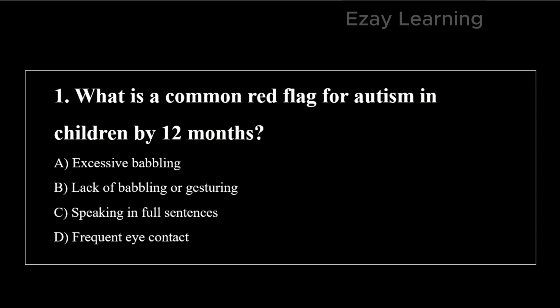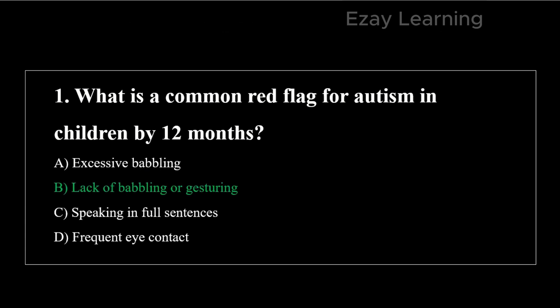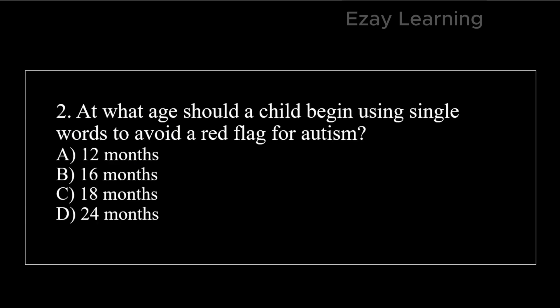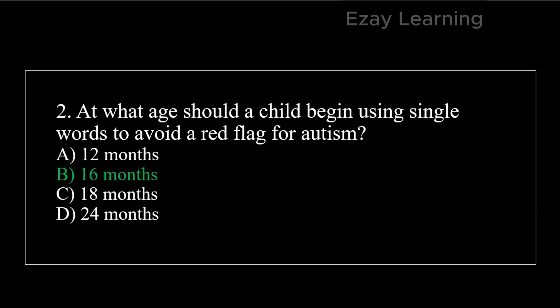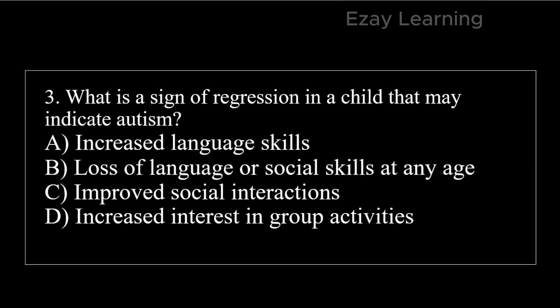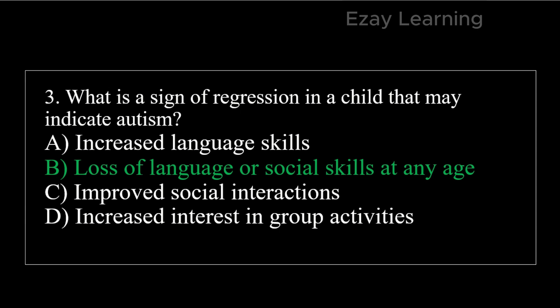Now for our MCQ part. Question: What is a common red flag for autism in children by 12 months? Answer: Lack of babbling or gesturing. Question: At what age should a child begin using single words to avoid a red flag for autism? Answer: 16 months. Question: What is a sign of regression in a child that may indicate autism? Answer: Loss of language or social skills at any age.